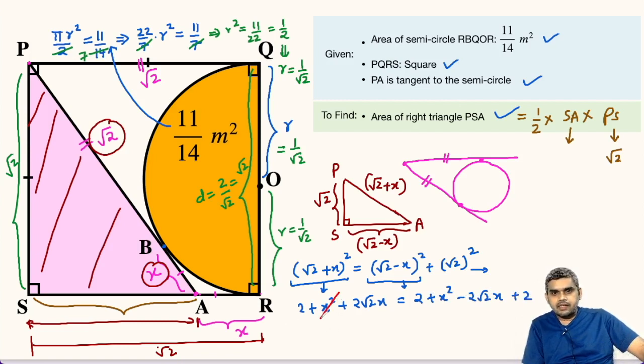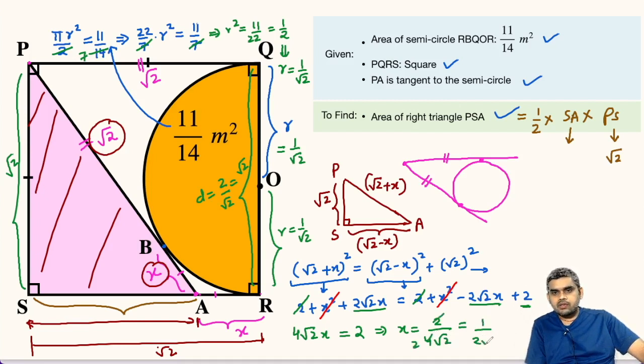We can cancel X² from both sides and we can separate the terms with variables on one side. So, this will be 4 root 2 X equals. Also, 2 and 2 will get cancelled. Only this 2 will remain here. So, we can write is equal to 2. So, X will be equal to 2 divided by 4 root 2. We can cancel it twice. So, 1 upon 2 root 2. So, the value of X is 1 upon 2 root 2.